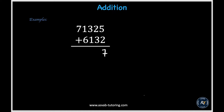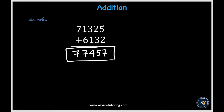In the tens place, we have 2 plus 3, which is equal to 5. In the hundreds place, we have 3 plus 1, which is equal to 4. In the thousands place, we have 1 plus 6, which is equal to 7. And then in the ten-thousands place, we have 7, which just gives us 7. So our final answer turns out to be 77,457.